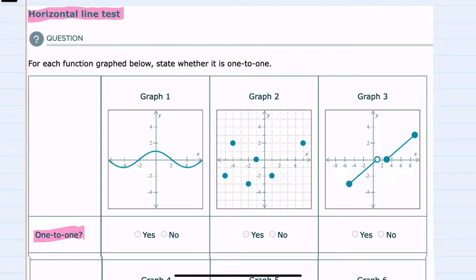And what the horizontal line test tells us is that if we can draw a horizontal line that crosses the graph more than once at any point, then it is not one-to-one.